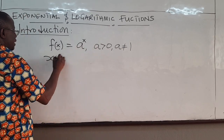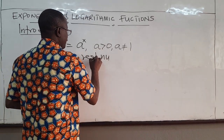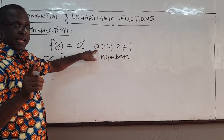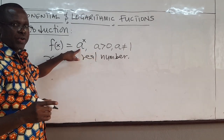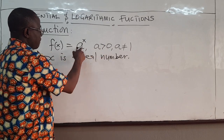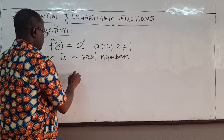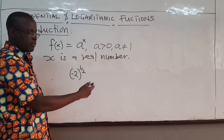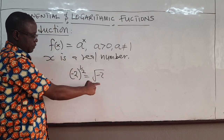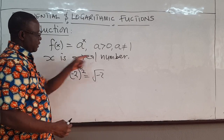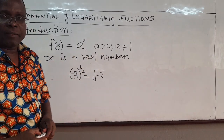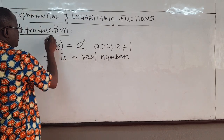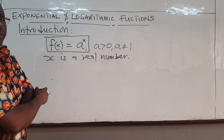Now, if a is less than 0, you're going to get a negative. x here is a real number. If a is negative, it's possible to get complex numbers. That's why we require that a must be positive. For instance, if a is negative 2 and x is one-half — remember, x is real, so you can do any real number — you're going to have a square root of negative 2, which would be a complex number. But we don't want complex numbers; we're dealing with real numbers. So that is one reason why we require that a must be positive and a must not be equal to 1. That is the definition of what an exponential function is.